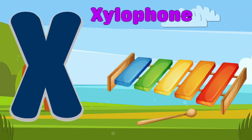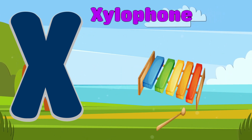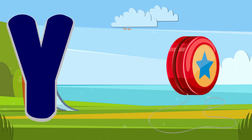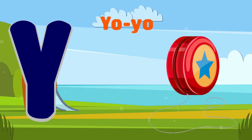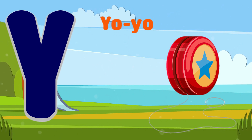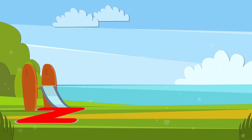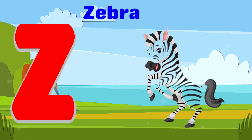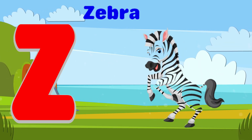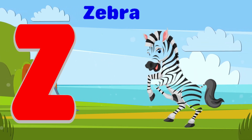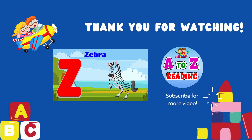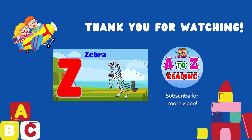X is for Xylophone. X-X-Xylophone. Y is for Yo-yo. Y-Y-Yo-yo. Y-Yo-yo. Z is for Zebra. Z-Z-Zebra. Z-Zebra.